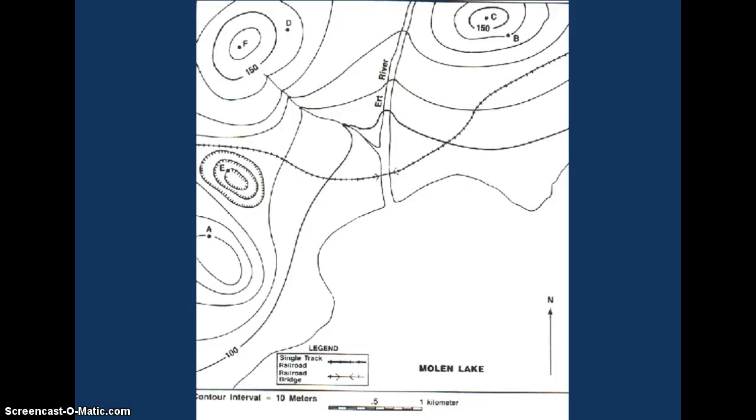Looking at this diagram, this is a simplified topographic map. Our contour interval is 10 meters. Most of the time, they're going to tell you at the bottom of the map what the contour interval is. If this line represents an elevation of 100 meters, this would be 200, 300, 400, and 500. So point A, where this hill right here, has an elevation of 500 meters.